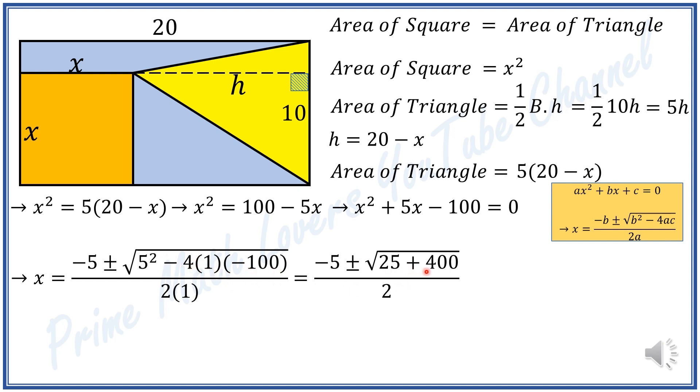Or negative 5 plus or minus square root of 425. This means we have two solutions. One solution is negative 5 minus square root of 425 over 2, or negative 5 minus 20.61 divided by 2.